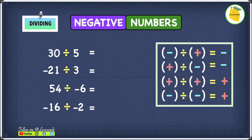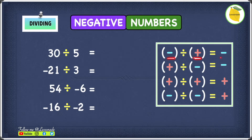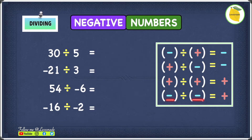Before we have a look at dividing negative numbers, we need to first have a look at this rule. When you divide a negative number and a positive number, your answer will be negative. When you divide a positive number and a negative number, your answer will also be negative. When you're dividing two positive numbers, your answer will be positive. When you're dividing two negative numbers, your answer will also be positive. In other words, when two of the signs are the same, the answer will be positive. When two of the signs are different, the answer will be negative.